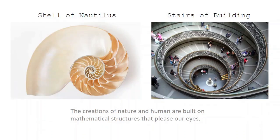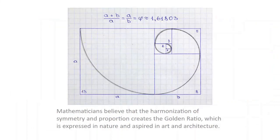The creations of nature and human are built on mathematical structures that please our eyes. Mathematicians believe that the harmonization of symmetry and proportion create the golden ratio, which is expressed in nature and inspired in art and architecture.